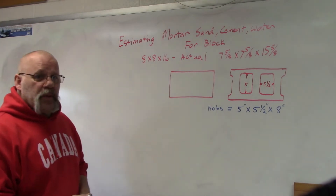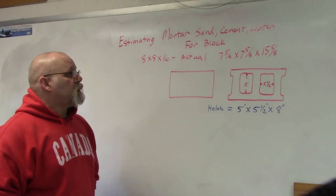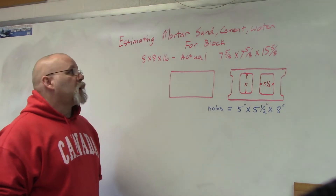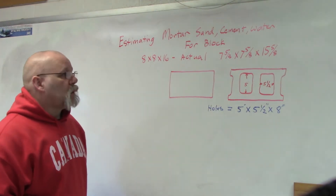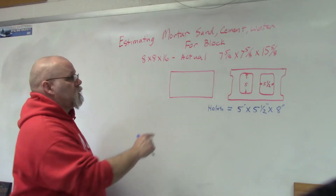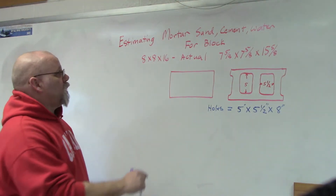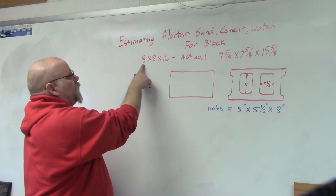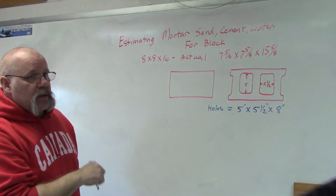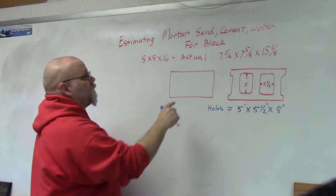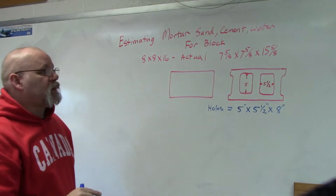In this video I'm going to show you how to estimate the amount of sand, cement and water needed to lay some block. I'm going to go with a standard size block, 8x8x16. The actual size of the block is 7-5/8 x 7-5/8 x 15-5/8.